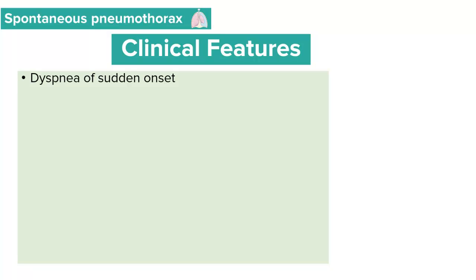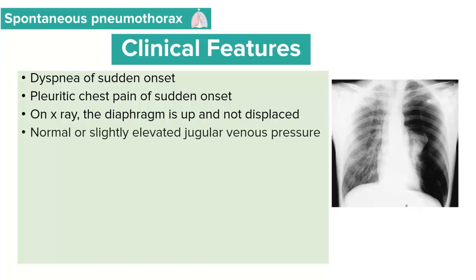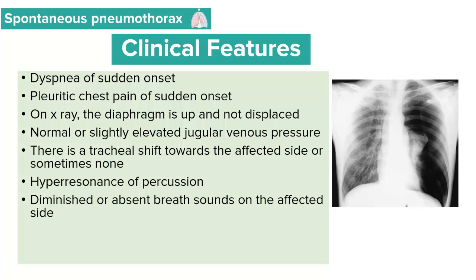When assessing a patient with spontaneous pneumothorax, these patients will present with dyspnea of sudden onset. On an X-ray, the diaphragm is up and not displaced, as compared to tension pneumothorax. These patients will have either normal or slightly elevated jugular venous pressure. There may be a tracheal shift towards the affected side, or none in cases of mild pneumothorax. On percussion, you hear a hyper-resonant sound on the affected side, and during auscultation there will be diminished or absent breath sounds on the affected side.